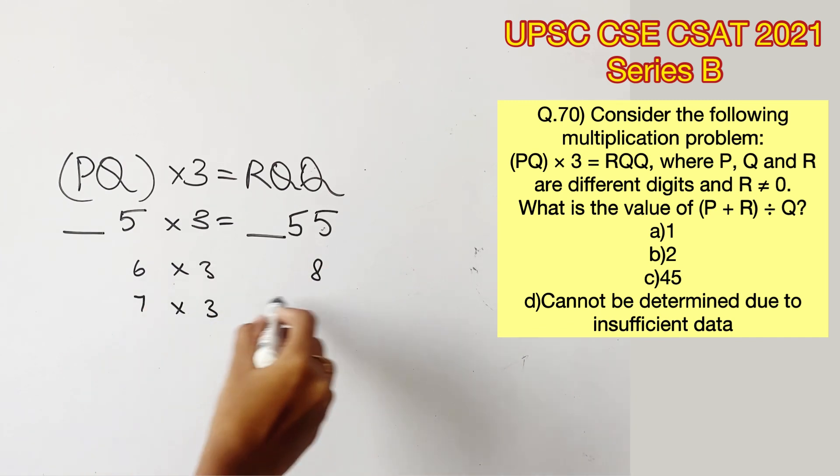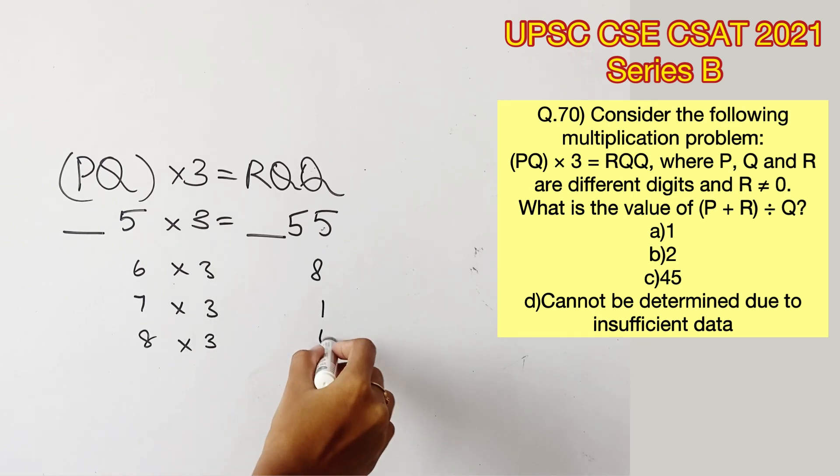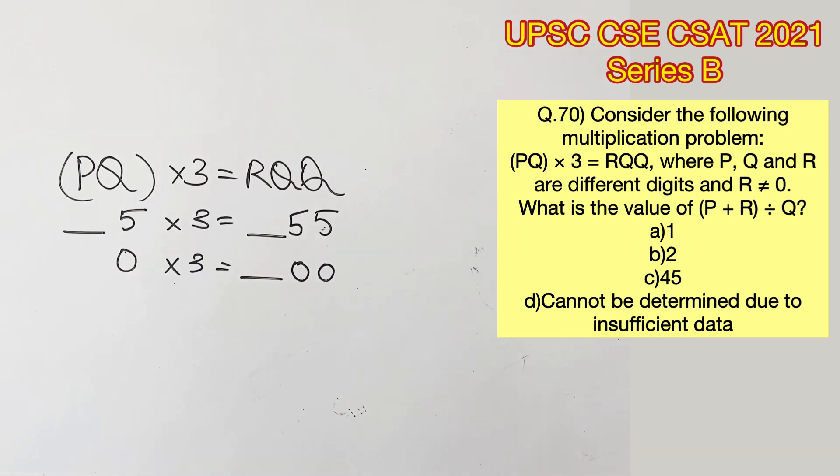6 into 3 will not give us 6 in the units place. 7 into 3 will give us 1 in the units place. 8 into 3 will give us 4 in the units place. 9 into 3 will give us 7 in the units place. 0 into 3 will give us 0 in the units place, so this can also be considered. Let's replace all the Qs with 0.